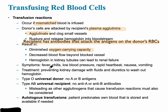You should know the significance of Type O and Type AB. Type O is the universal donor, and the best universal donor is O negative. The best universal recipient is AB positive.